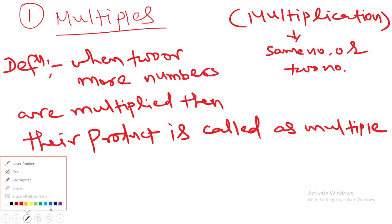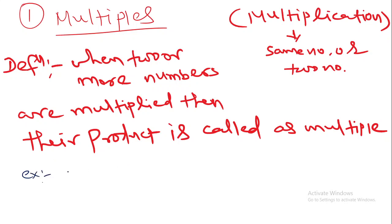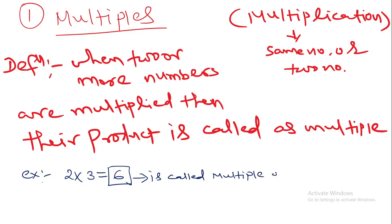Let us take an example. For example, when two is multiplied by three, their product is six. So this answer, six, is called the Multiple of two and three. Whenever two numbers are multiplied, the answer we get is called the Multiple. I hope all of you understand the definition.